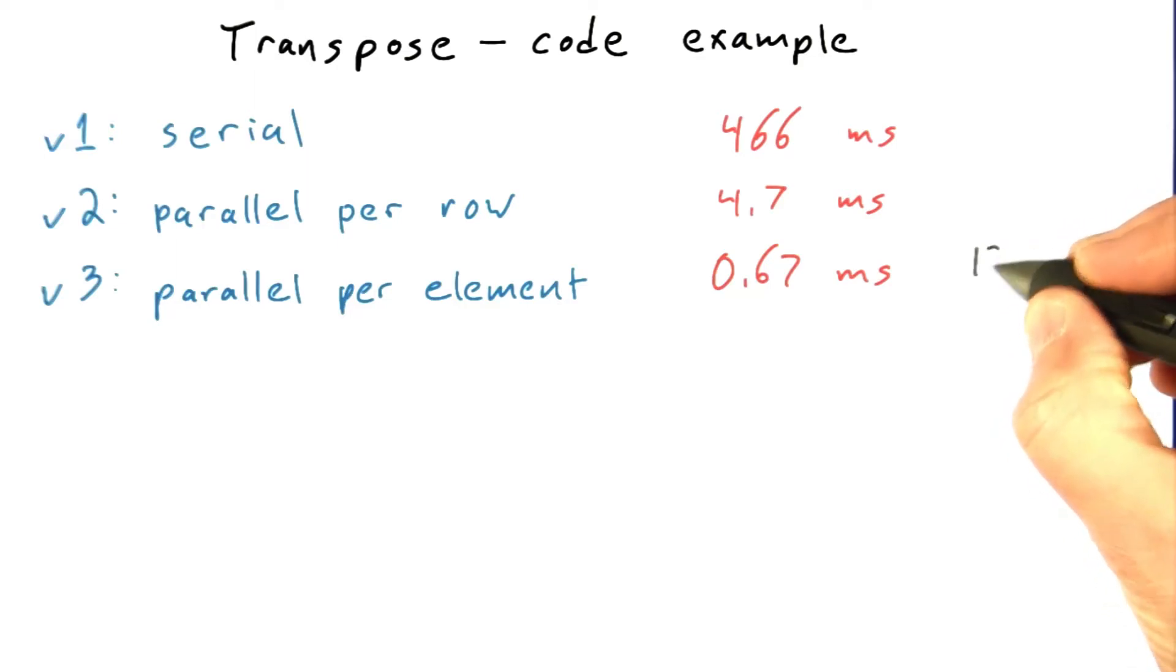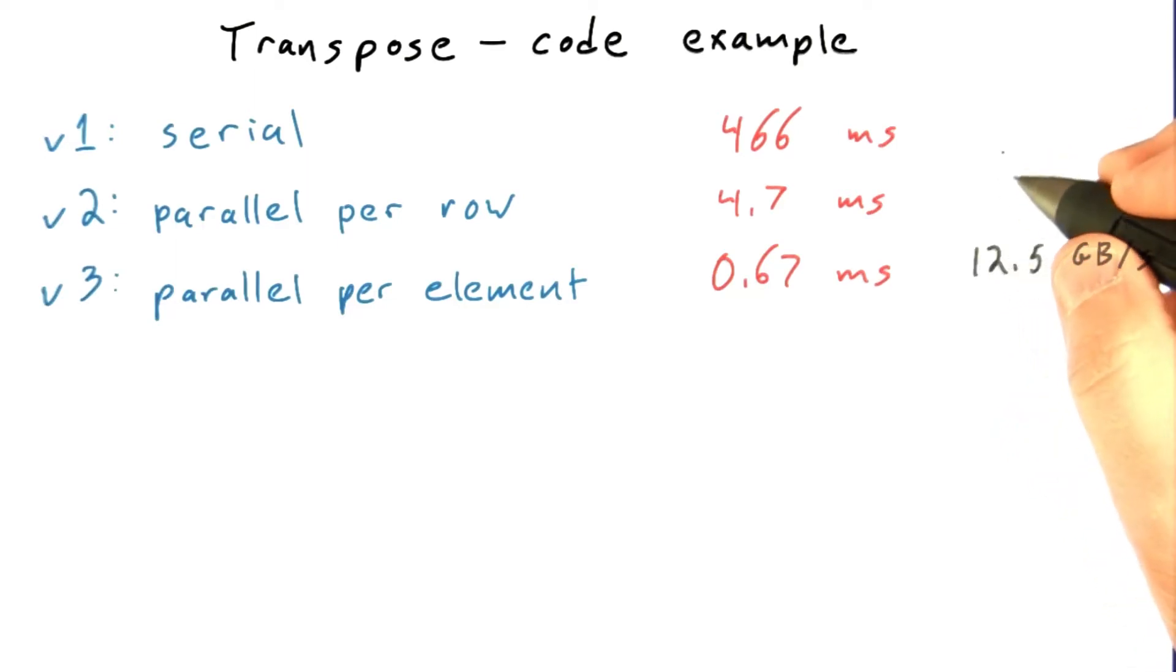So if we go through this analysis for all of these kernels, we'll see that our parallel per element version of the code achieves 12.5 gigabytes per second. Our parallel per row version of the code gets about 1.8 gigabytes per second. And our serial version of the code gets an abysmal 0.018 gigabytes per second.